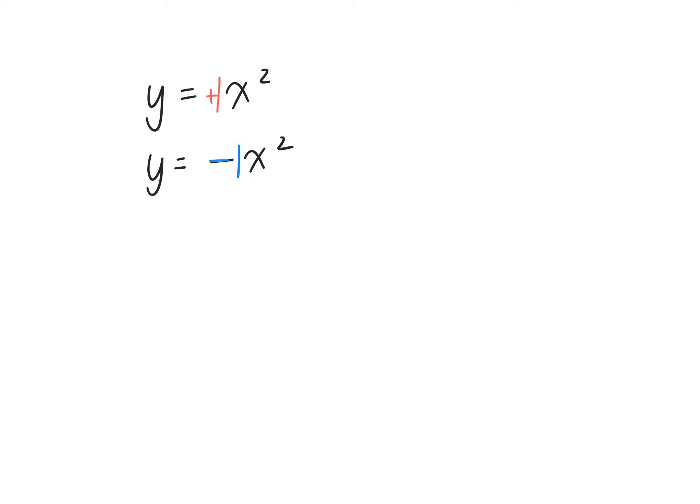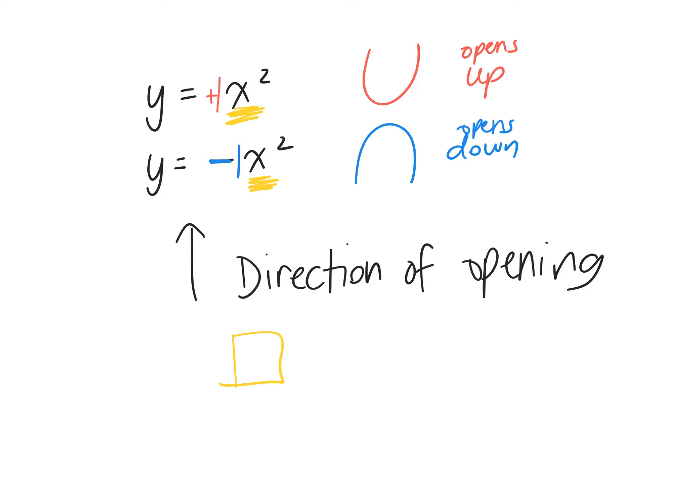How did these differ? What was different about this? Excellent. One of them was facing up. I want you to copy this down. And if it had a negative in front of it, it was facing down. So one of them opens up and one of them opens down. Anytime there's a negative in front of the x-squared term, that tells you the direction of opening. Whatever is in front of the x-squared term will always tell you the direction that it opens.